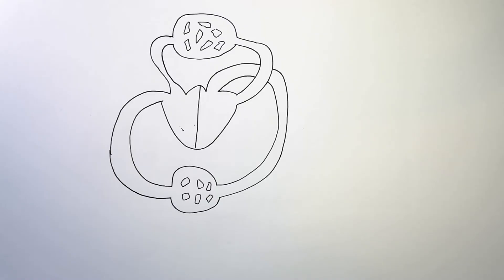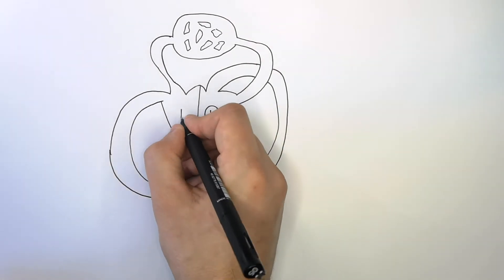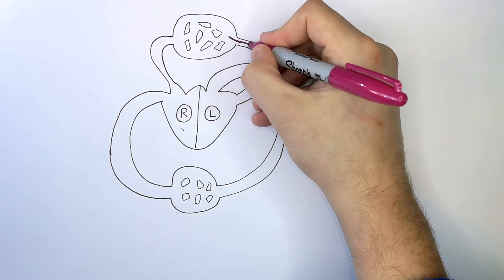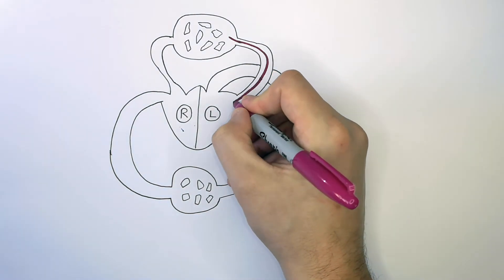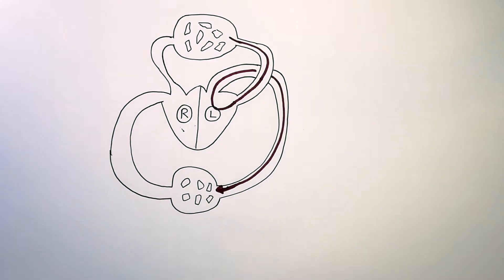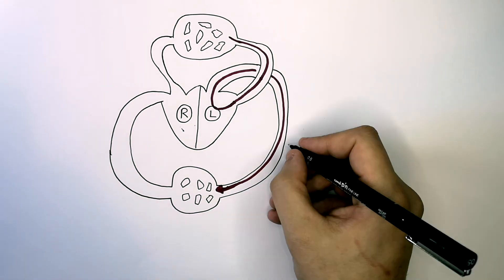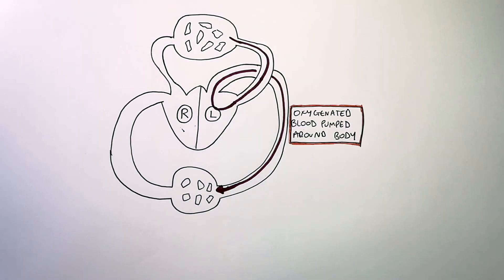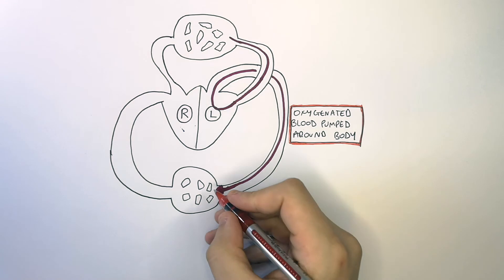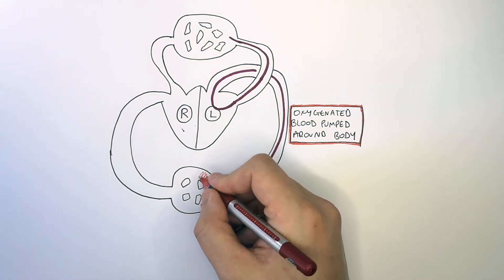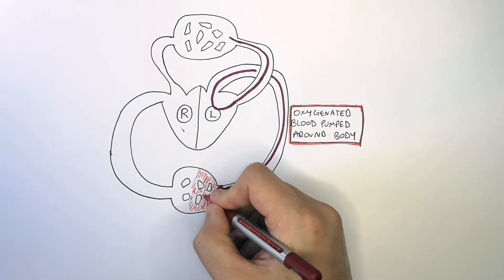This is a diagram of the double circulatory system that you have to be able to interpret. Our heart has a left side and a right side, where oxygenated blood is transported from the lungs to the left side of the heart, and oxygenated blood is then pumped around the body to organs and muscles and other respiring cells. The left side pumps oxygenated blood around the body. The blood then enters the capillaries that surround the organs, where oxygenated blood supplies those organs or muscles or respiring cells with oxygen and glucose for respiration.